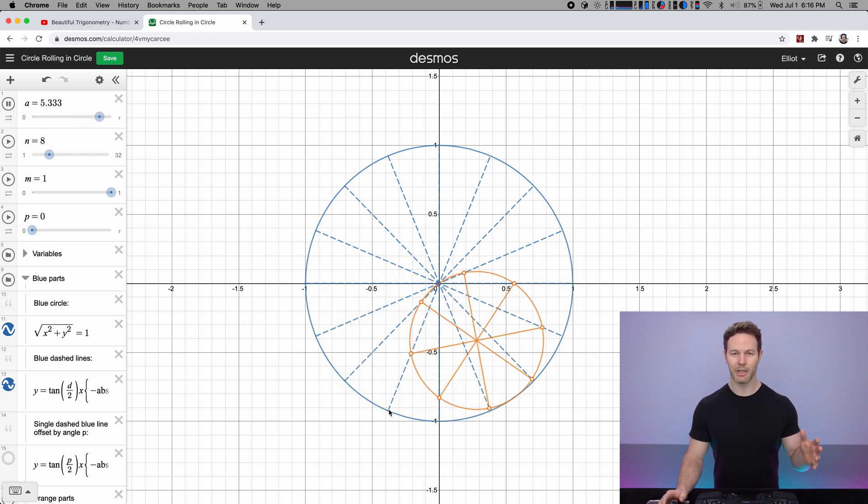Here we have the spinning wheel, and all the orange dots are following these blue dashed lines. The question is, why when we rotate a circle inside another circle that's twice its size in diameter, do the points on the edge of the orange circle follow a straight line?